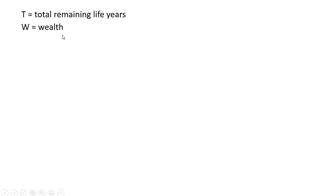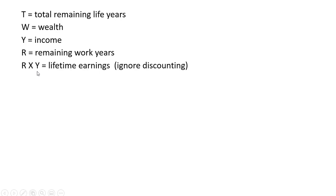Let's start defining some of our key variables. T is the total remaining life years. W is wealth. Y is income. R is remaining work years. R times Y is lifetime earnings. We're going to ignore discounting. And C is going to be consumption.